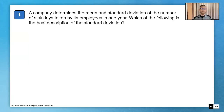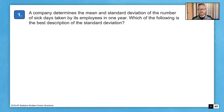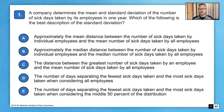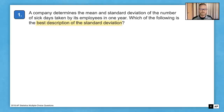Here is question number one. A company determines the mean and standard deviation of the number of sick days taken by its employees in one year. Which of the following is the best description of the standard deviation? This question is about the interpretation of the standard deviation. In order to arrive at that, let's start by looking at the formula for standard deviation, which is provided for you on the formula sheet for the AP exam.